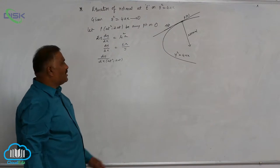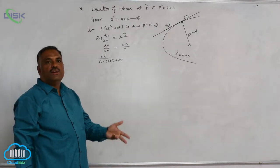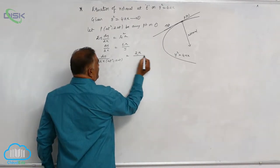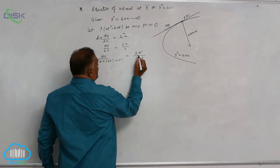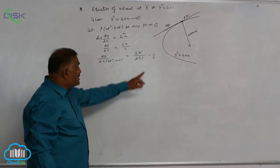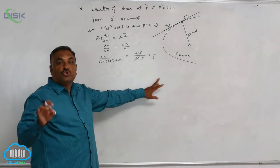In any case, if you are not given a point, you have to assume the generalized coordinates, that is equal to 2a divided by 2at, is equal to 1 by t. Please remember, this is the slope of tangent. dy by dx is equal to slope of tangent.